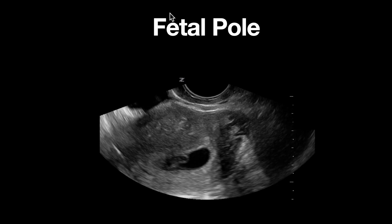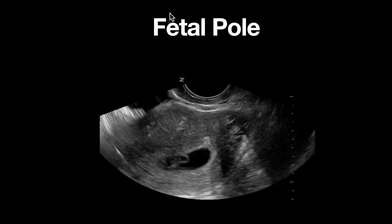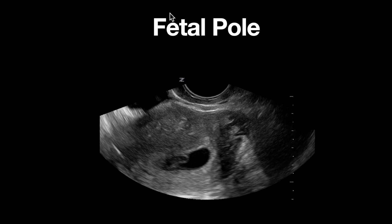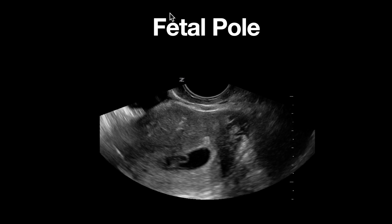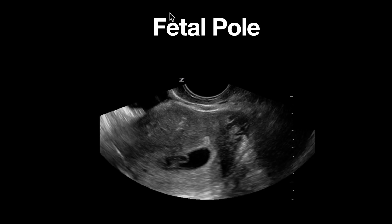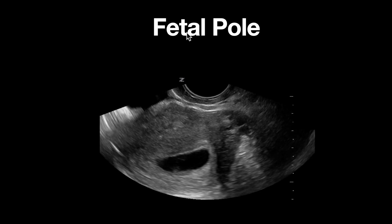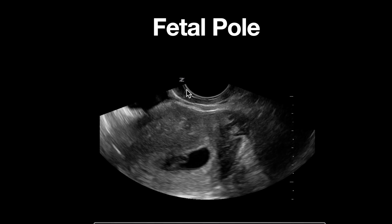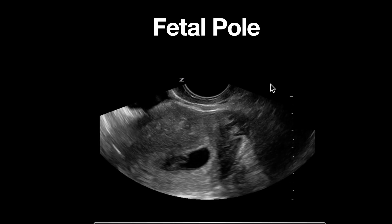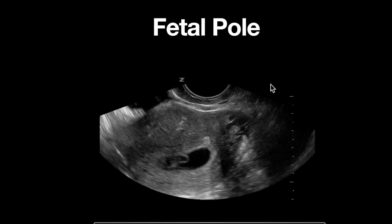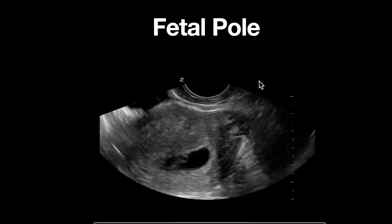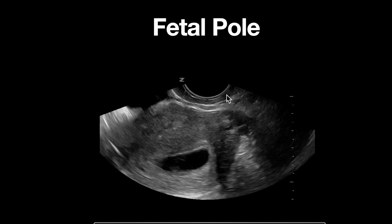This is an ultrasound clip demonstrating an intrauterine pregnancy with the presence of both a fetal pole and a yolk sac. An endocavitary probe is used, as delineated by the semicircular shape of the footprint at the top of the screen. Based on the structures we're seeing, this is a transvaginal view of the uterus in a near sagittal orientation.